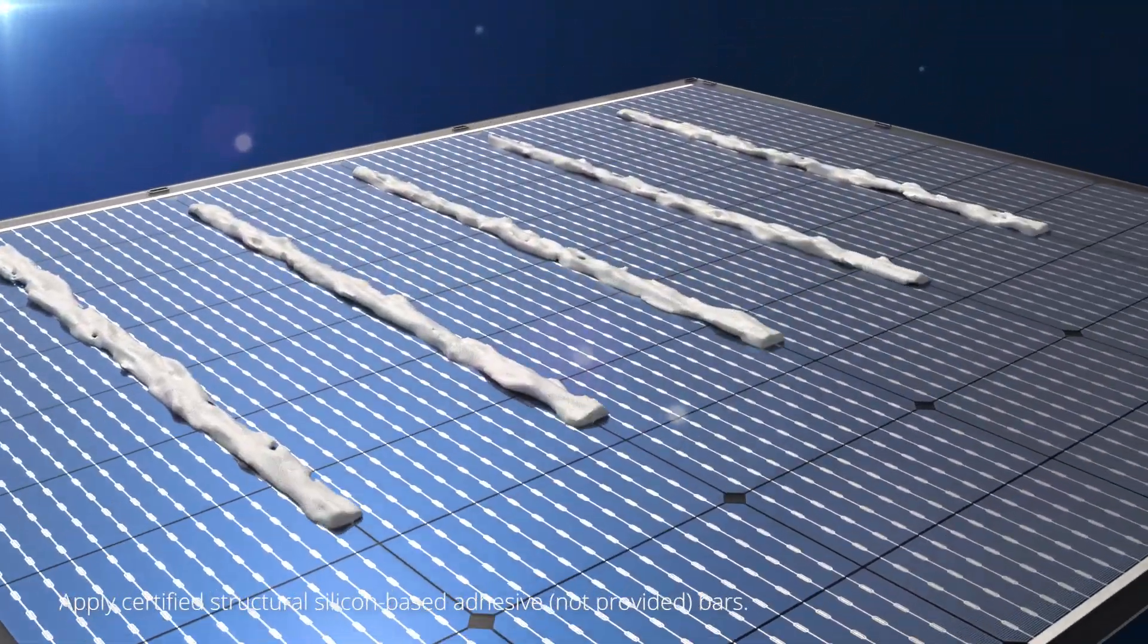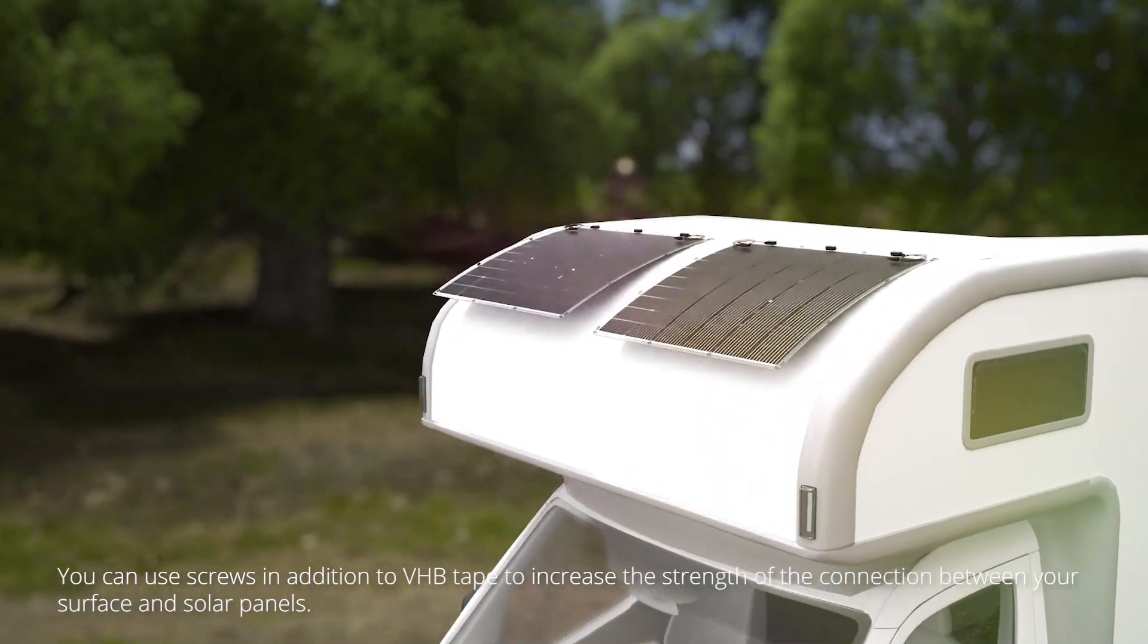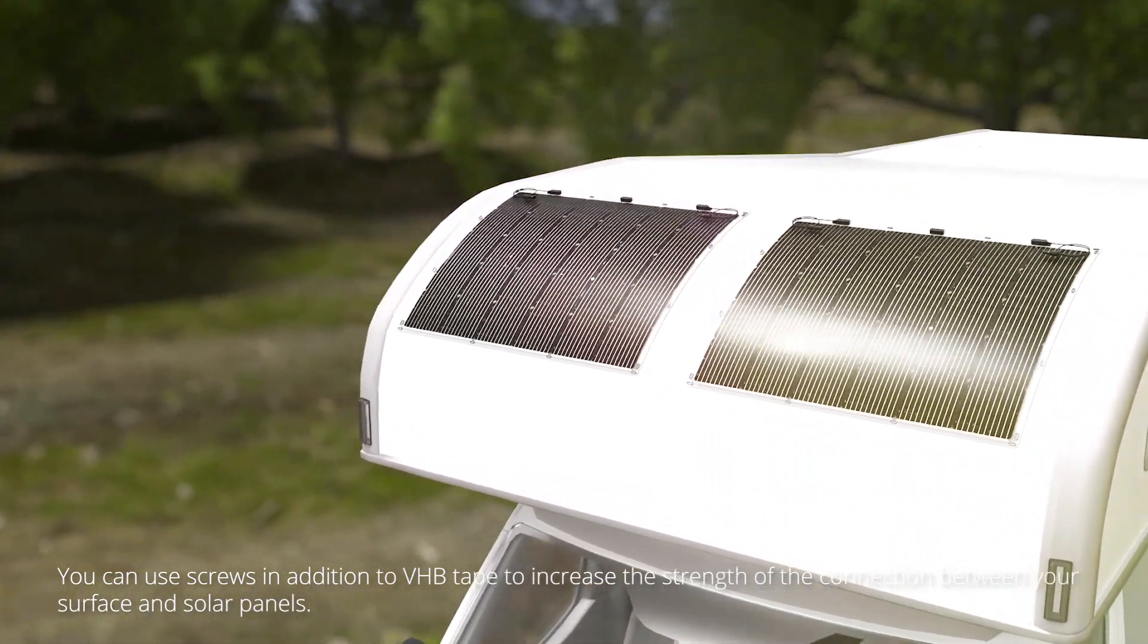Apply certified structural silicon-based adhesive bars. You can use screws in addition to VHB tape to increase the strength of the connection between your surface and solar panels.